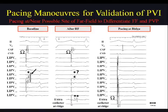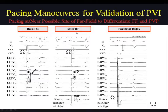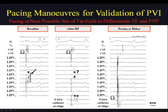Here is an example of far-field pacing validation in the left inferior pulmonary vein during CS distal pacing. At baseline, there is a fragmented far-field potential and a sharp PV potential. After proximal ablation, the electrograms are slightly split but it is unclear whether this is a PV potential or a split far-field. Placing an extra catheter at the ridge and recording the split potential there indicates it is likely a double far field. Pacing on the ridge completely anticipates the potential, confirming it as a double far field unmasked by differential pacing.